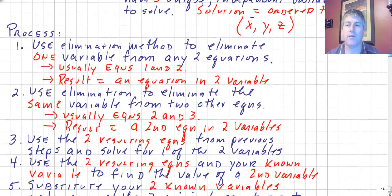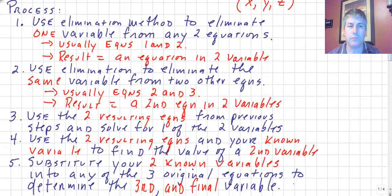Let's go through that process. Knowing the elimination method is going to be very helpful for this particular process. We'll use the elimination method to eliminate one variable from any of the two equations, or from two of the three equations. We'll usually use the first and second equations, and the result, once we eliminate one of the variables, will be one equation in two variables. We'll tuck that particular equation aside.